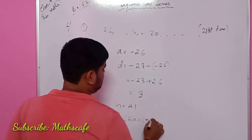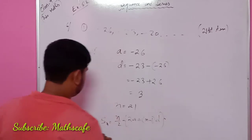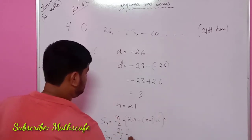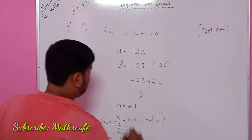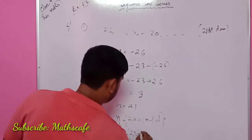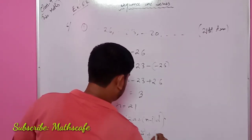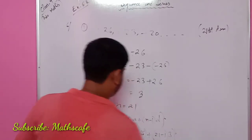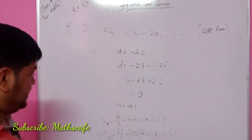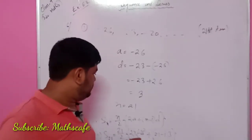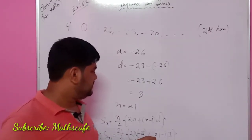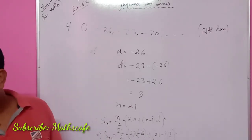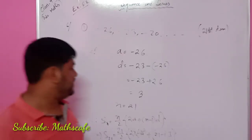Twice a plus n minus 1. I will say that S of n is 21, so 21 by 2. The value is minus 26. What is the value? 21 minus. What is the value? You will say that rank — where is the value?